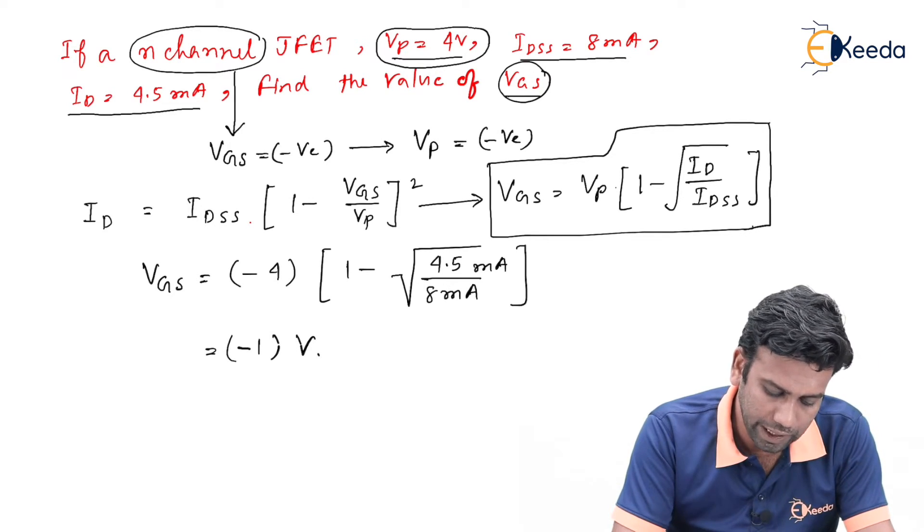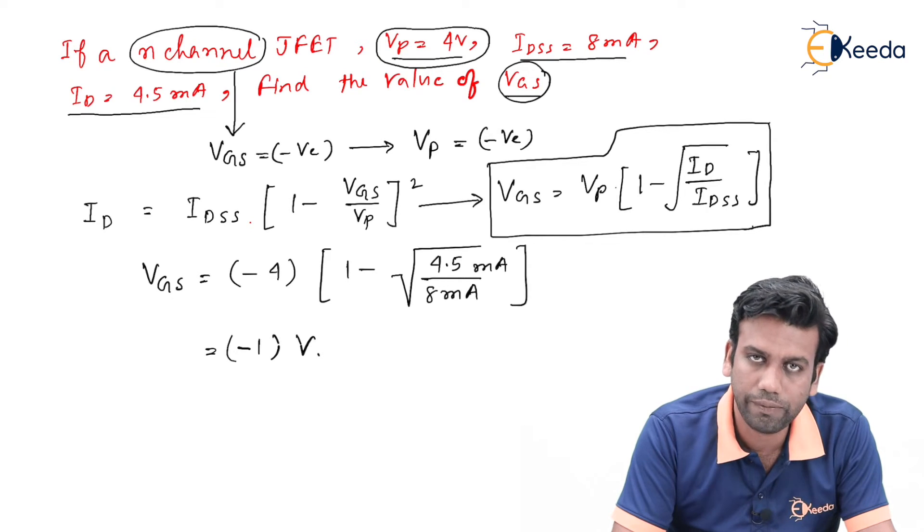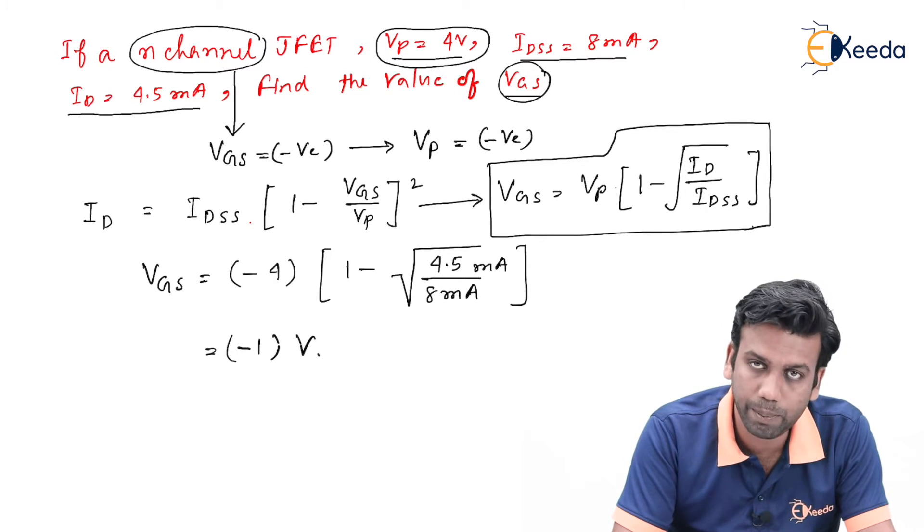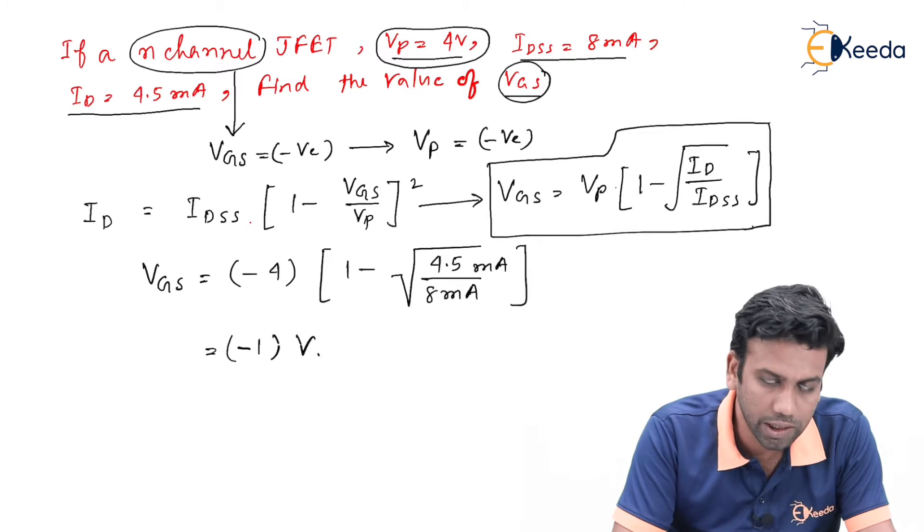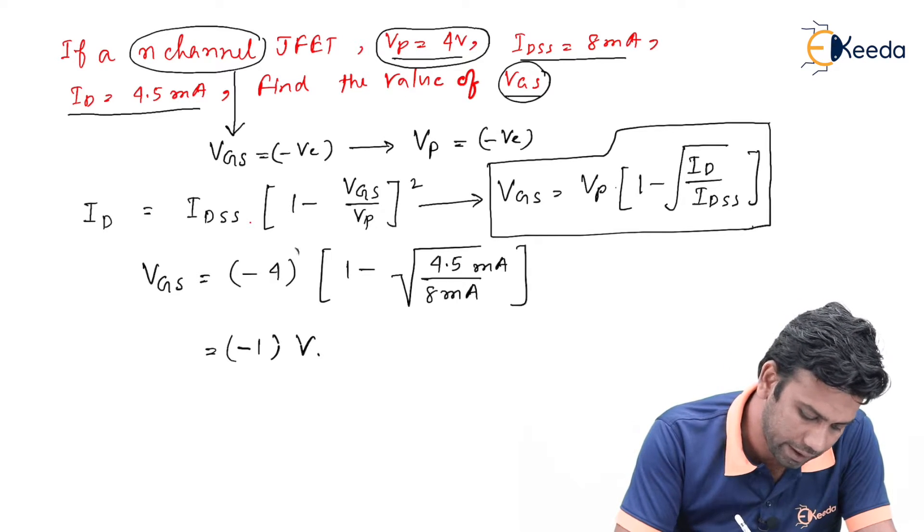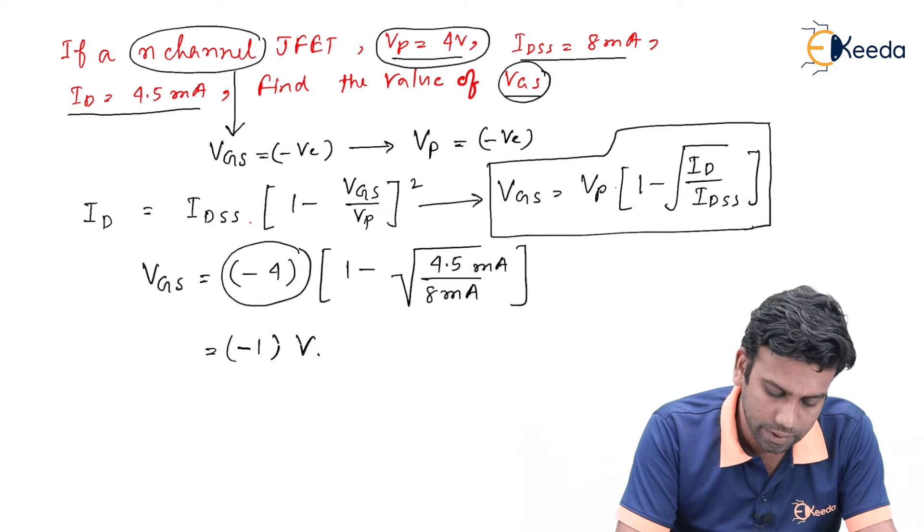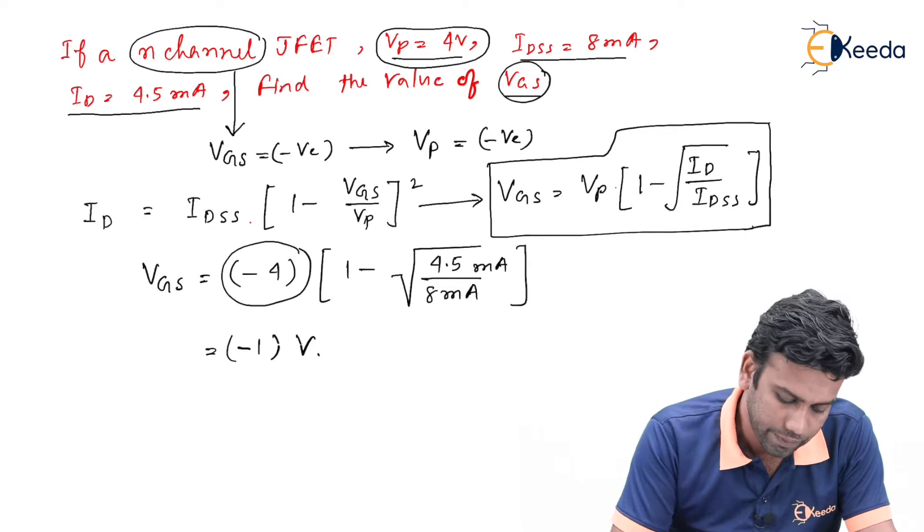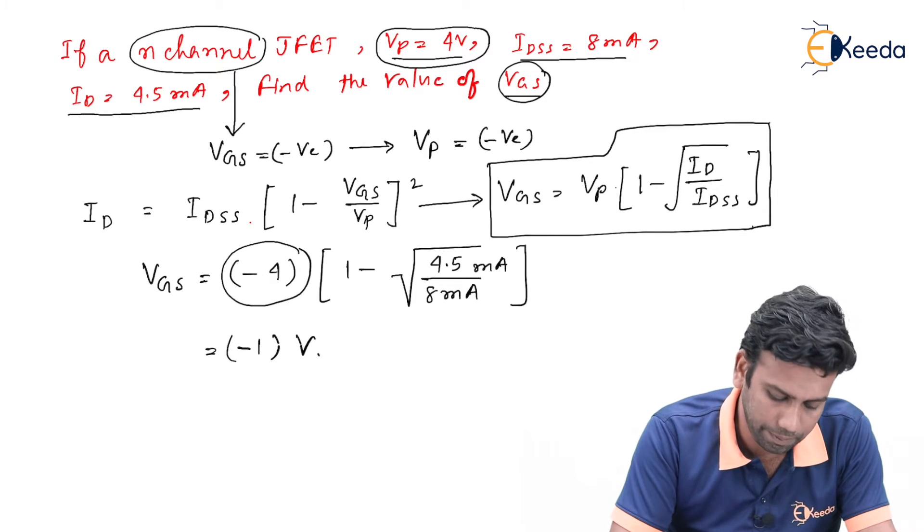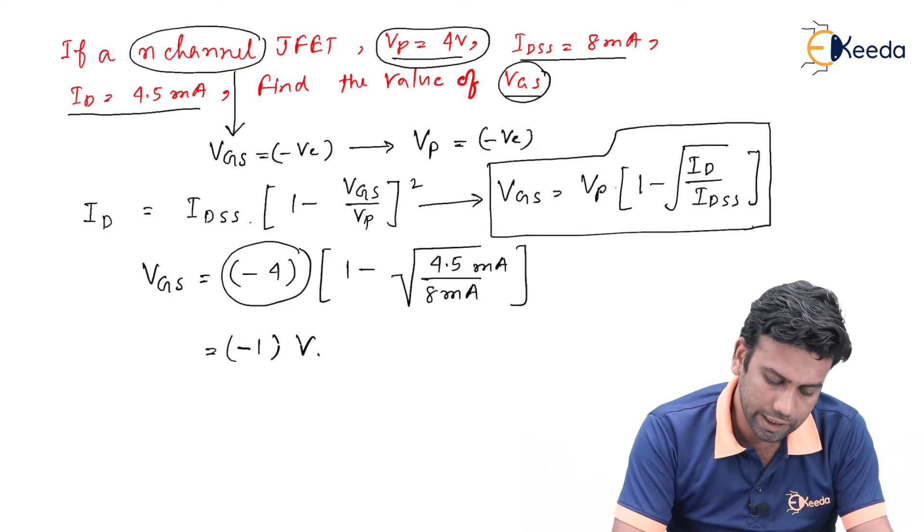In this case, we can see though Vp is given as 4 volt, but they have mentioned that it is an n-channel JFET, that's why we have taken minus 4. So always give the signs according to the channel name.